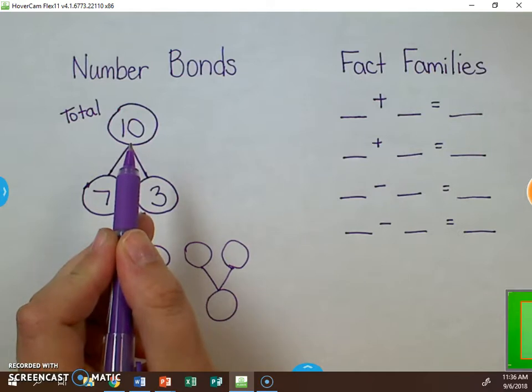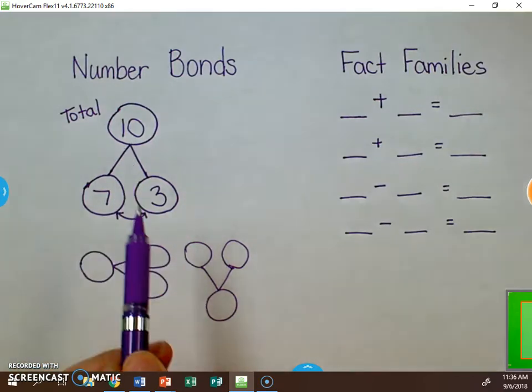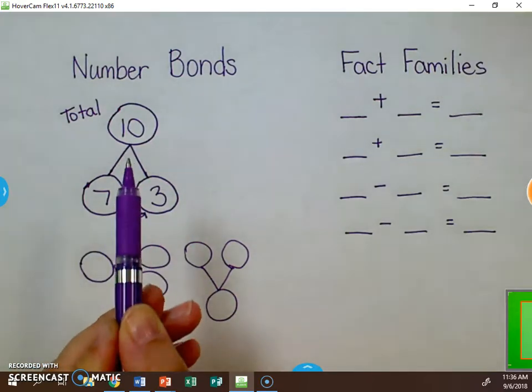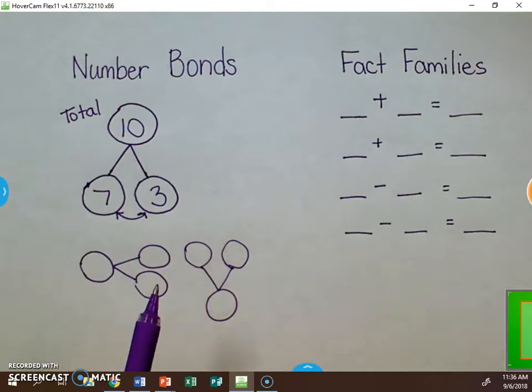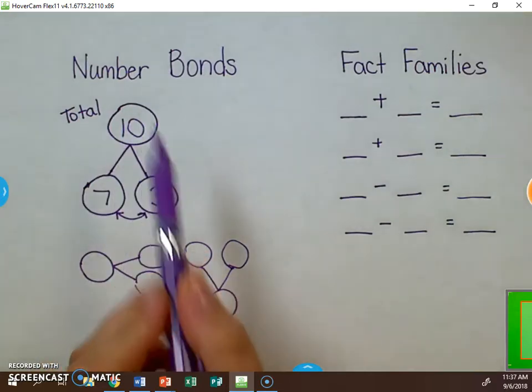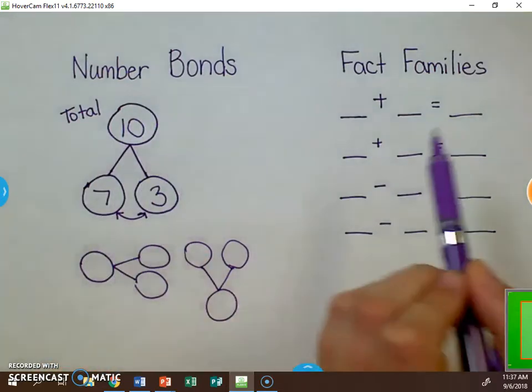This number bond shows that 3 and 7 work together to create 10. These numbers go together to form a relationship. Another way of looking at it is as a fact family. You use the numbers created in the number bond to